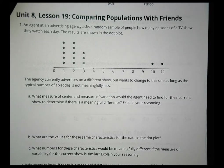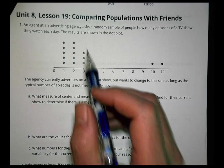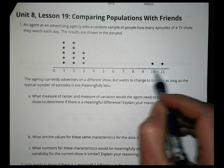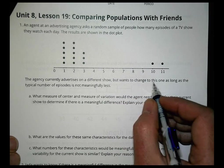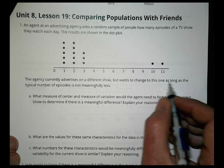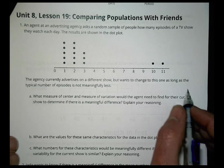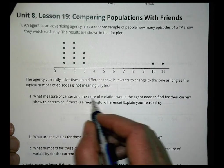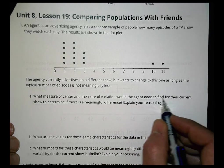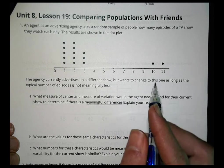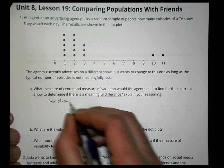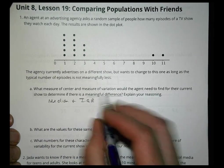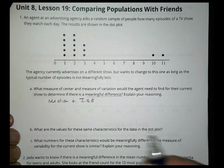Homework question 1: An advertising agency asked a random sample of people how many TV episodes they watch per day. The dot plot shows lots of ones, twos, and threes, plus some outliers watching much more. The agency wants to change shows as long as the typical number isn't meaningfully less. I'd recommend using the median and interquartile range.